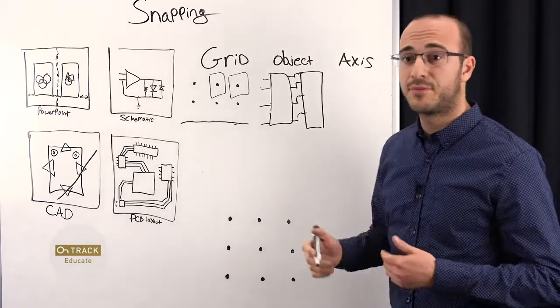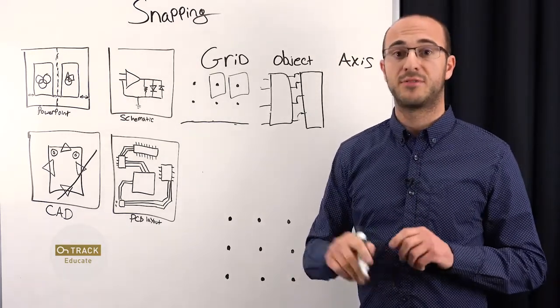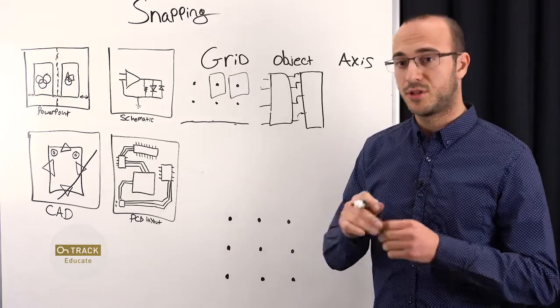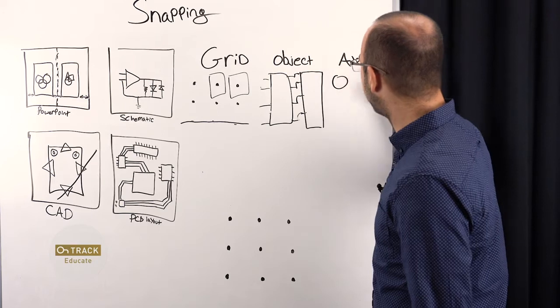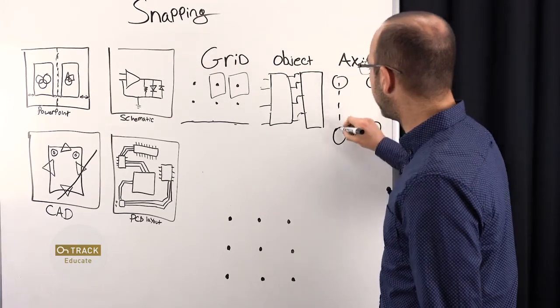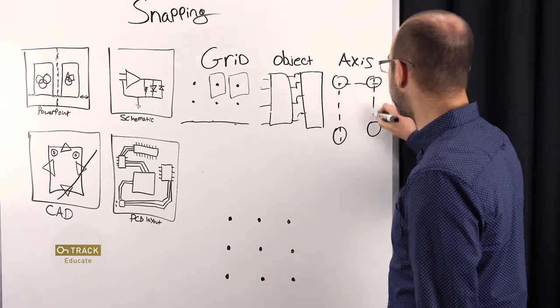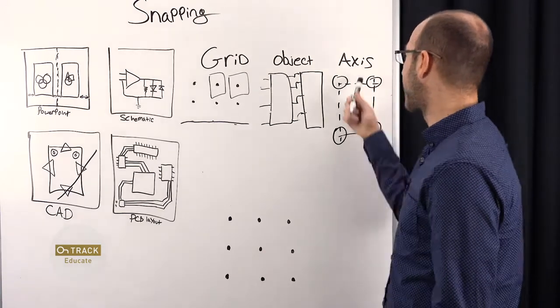Next is axis snapping. This is helpful if you want to maybe have text on your silk screen. Have it readable. You can place it on an axis. And also maybe something like mounting holes. If you want to align mounting holes along the same axis, you can do that very easily with axis snapping.